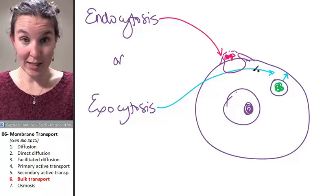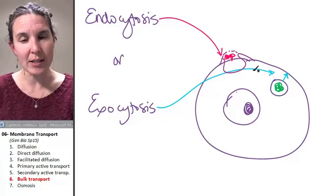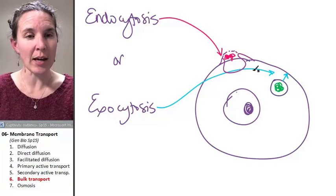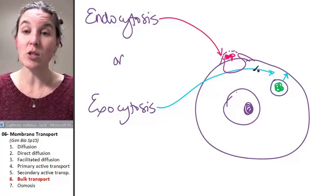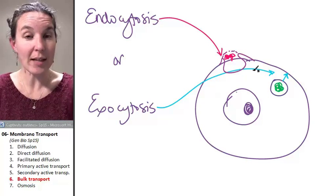Endocytosis in Wendy language is yumshalize. The cell just yumshalized the pink stuff. Exocytosis in Wendy land is barf. The cell just barfed out the green stuff. That's it.